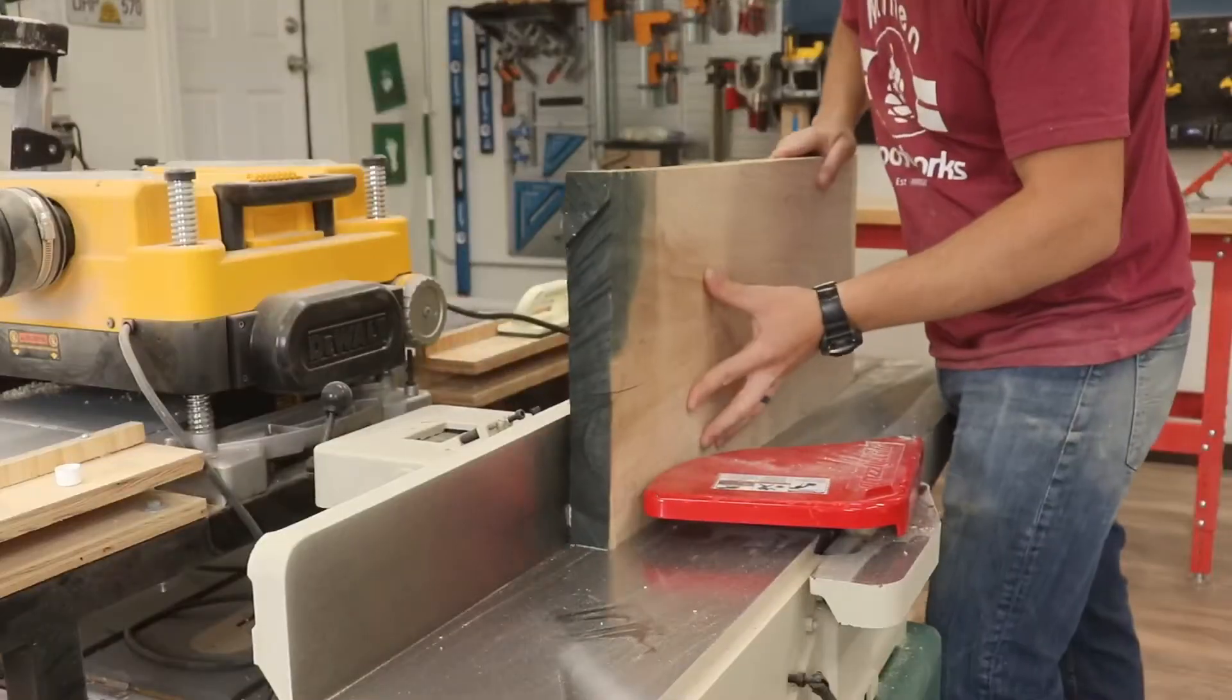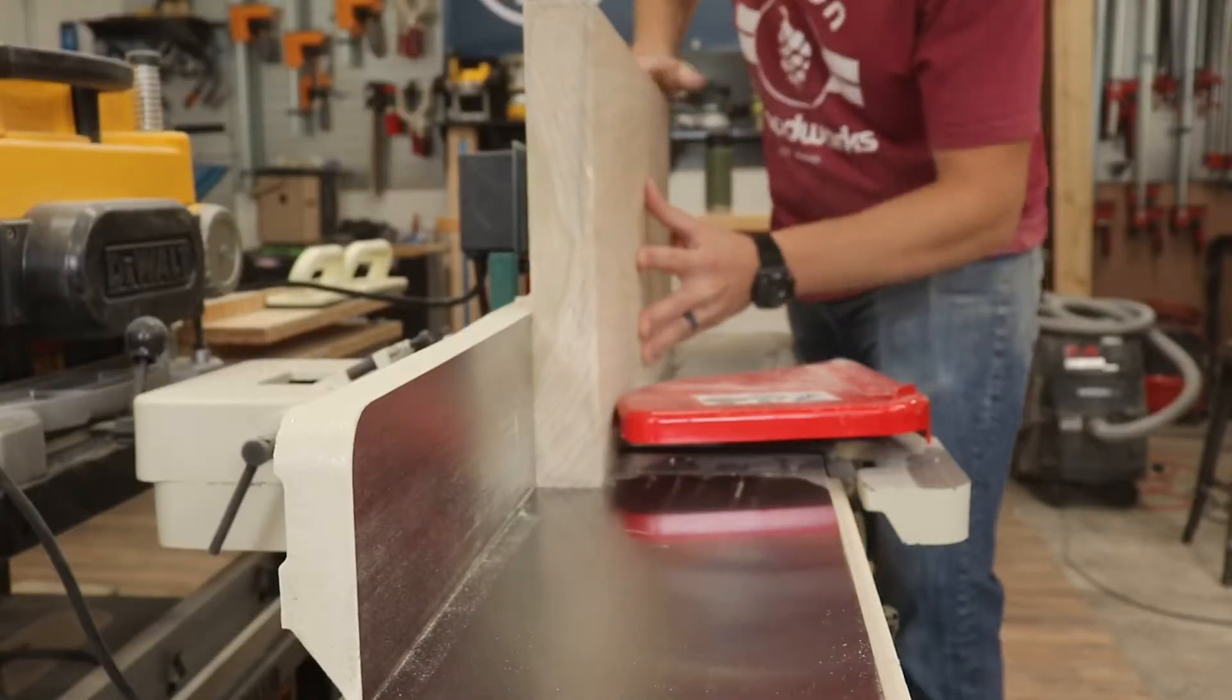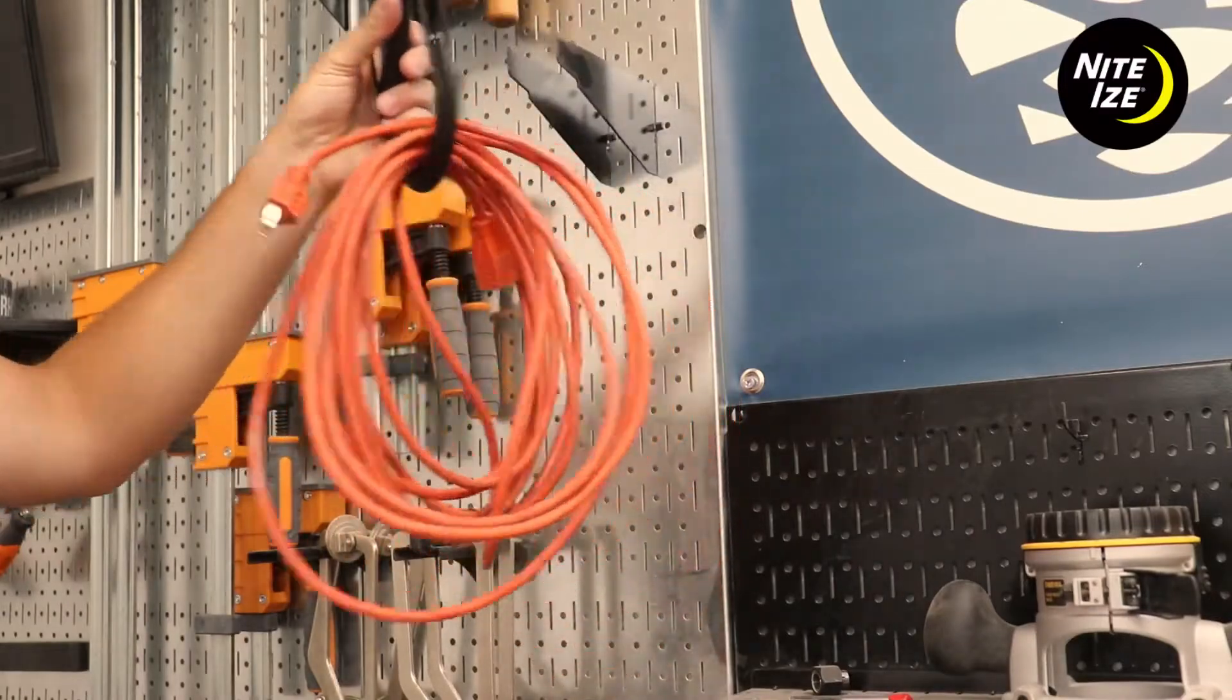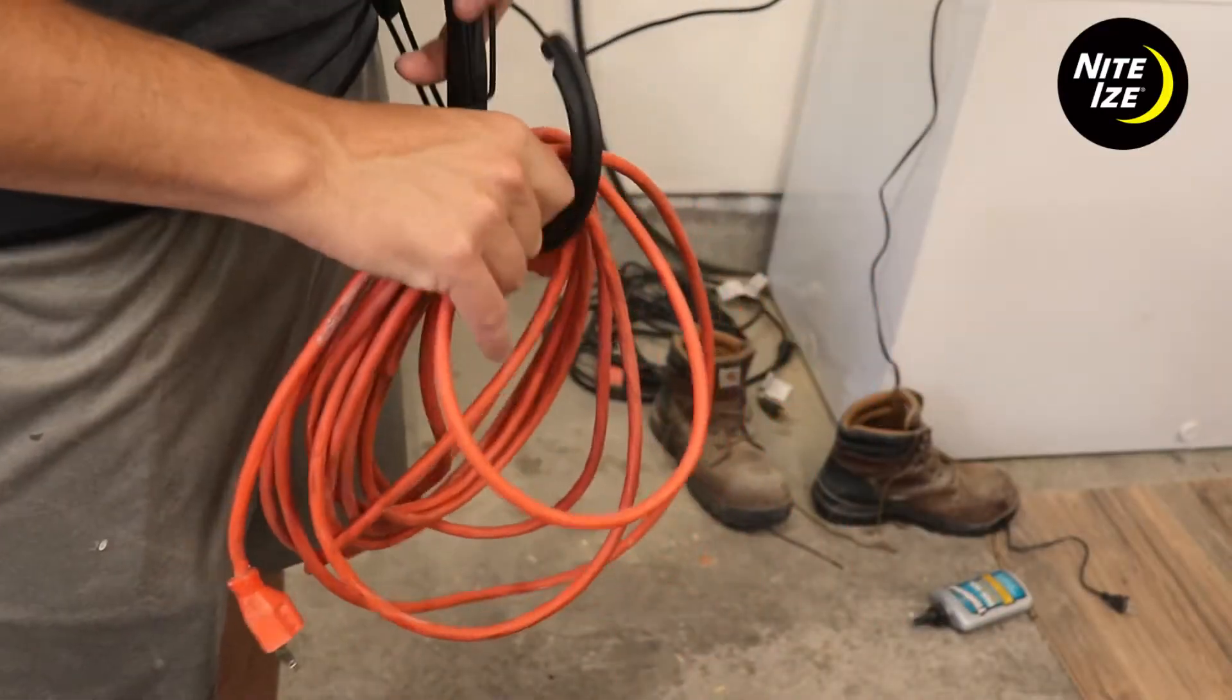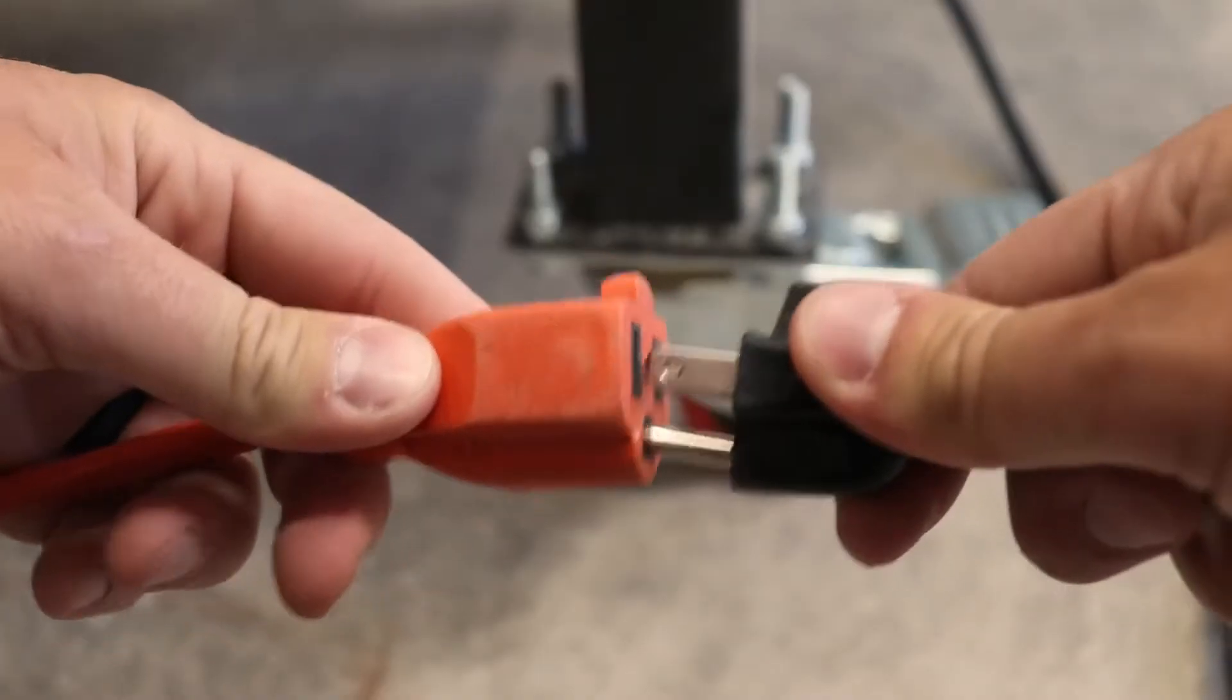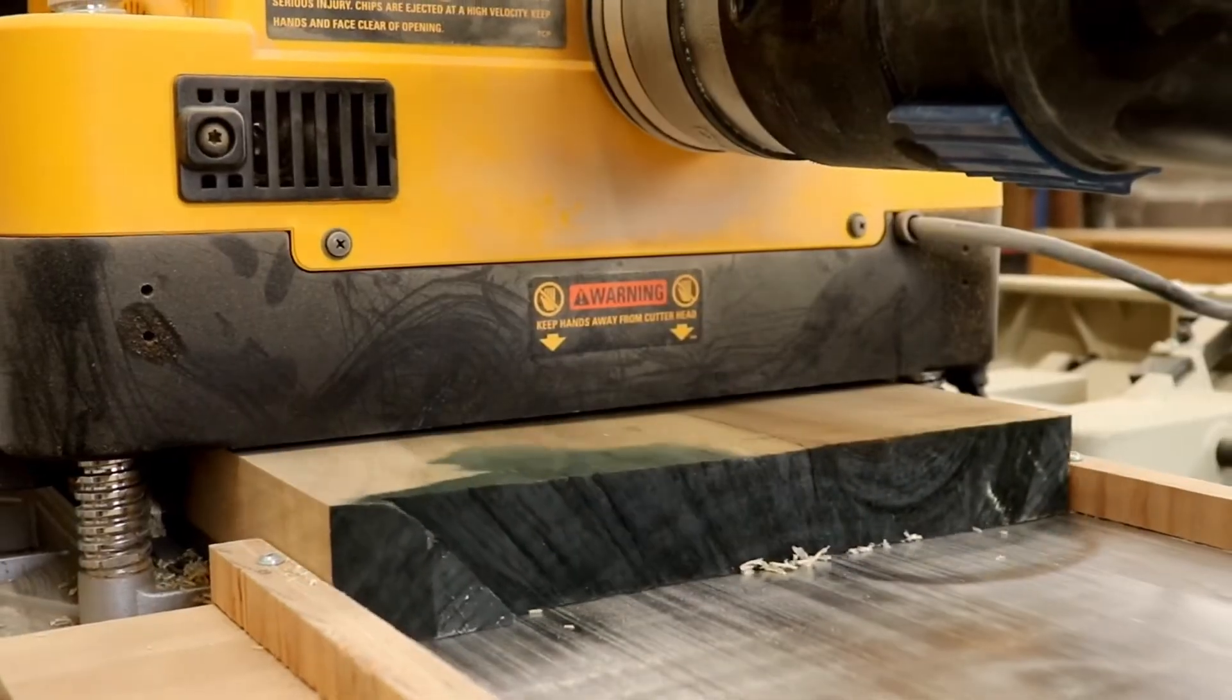So after the bow tie was in, I went to my jointer, got it squared up, and went to my table saw as well to cut it to the right width. And then I went to the planer to plane down the bottom side. I just forgot to film the table saw, which always seems to happen, at least on one shot in every video.